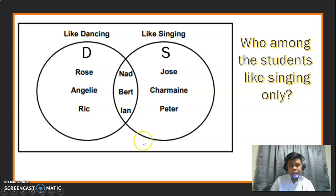To answer that, look at set S. Ang hahanapin natin yung mga students na ang gusto ay yung pagkanta lang. Singing only. We have three elements. We have Jose, Charmaine, and Peter. Si Nad, Bert at Ian kasali sa singing, pero kasali rin sila sa dancing. Ang hinahanap ng problem is yung singing lang. Eto lang sila. Tatlo lang yan.